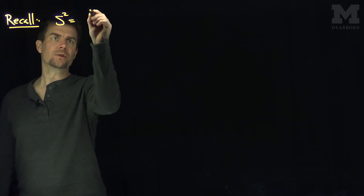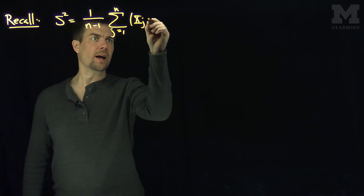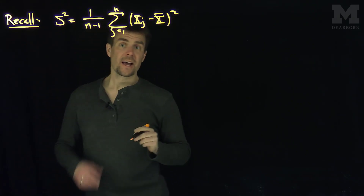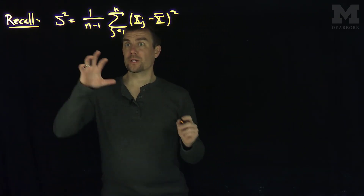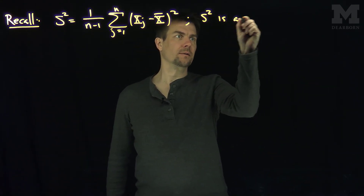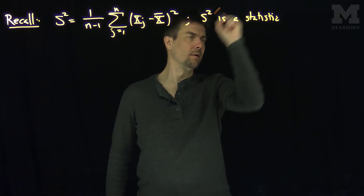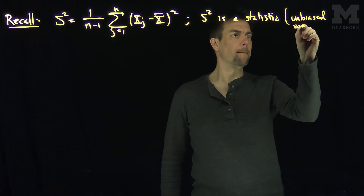Hello students. In this video we discuss the distribution of the s-squared estimator for the population variance. Let's recall from previous work that s-squared is 1 over n minus 1, the sum j goes from 1 to n of xj minus x-bar squared. We found previously the expected value of s-squared was equal to sigma-squared. This s-squared statistic is called the unbiased sample variance.